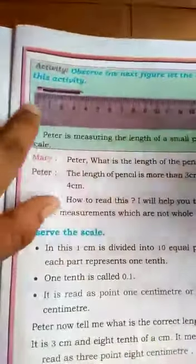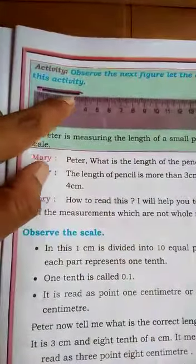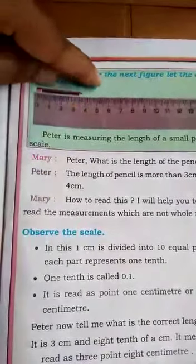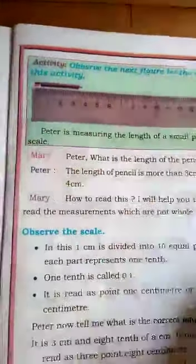This is the way to measure the exact measure of an object using your ruler. Now, exercise 9.3.